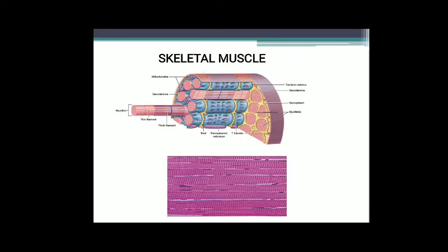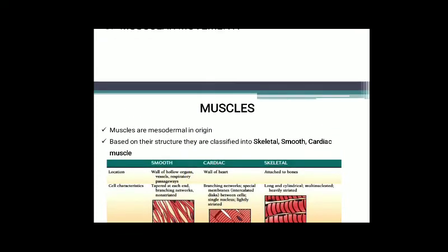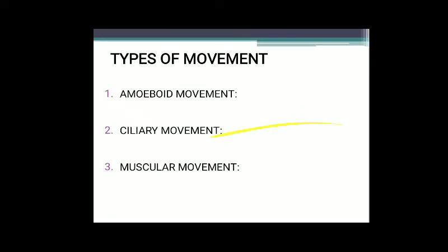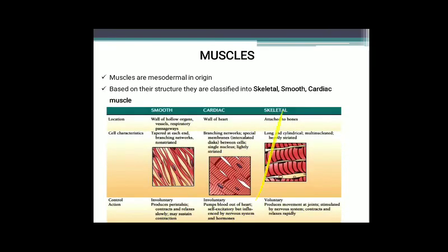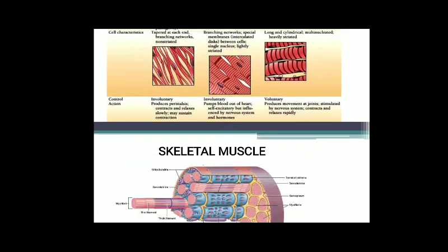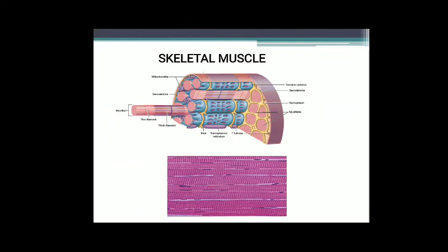Skeletal muscle is made up of muscle bundles known as fascicles, held together by collagen connective tissue known as fascia. Each muscle bundle contains a number of muscle fibers. Each muscle fiber is lined by a plasma membrane called sarcolemma, enclosing sarcoplasm. We can see sarcolemma as well as sarcoplasm in the structure.